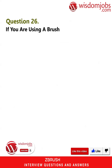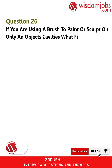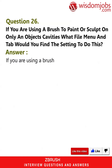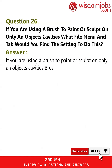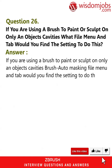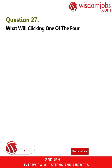Question 26: If you are using a brush to paint or sculpt on only an object's cavities, what file menu and tab would you find the setting to do this? Answer: Brush auto masking — the setting is found under the Brush auto masking file menu and tab.